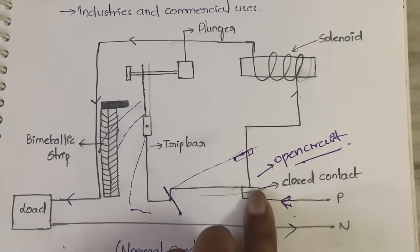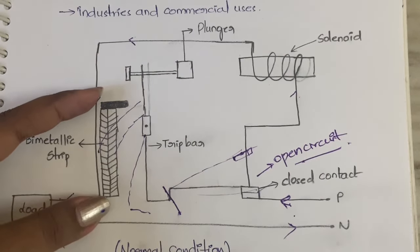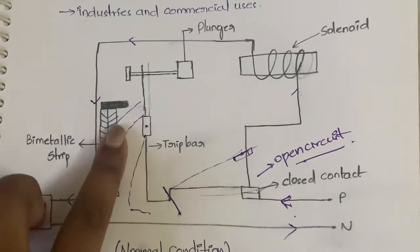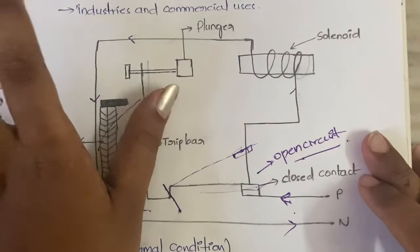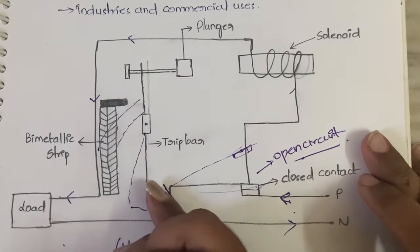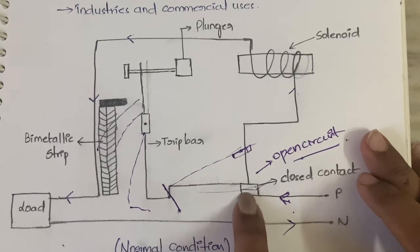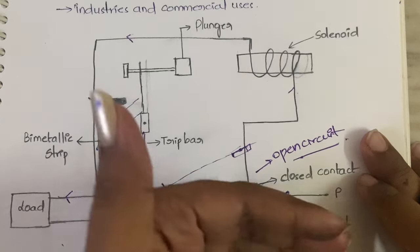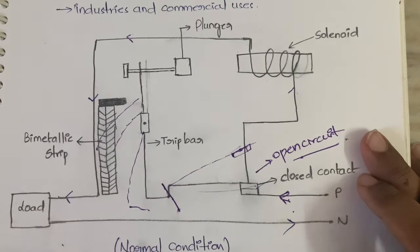To summarize the slow-increase case: excess current flows from the phase to the bimetallic strip, heat is produced, the strip heats up and bends, it hits the trip bar, the trip bar displaces, the closed contact is disturbed and raises up, becoming an open circuit, and ultimately no current flows.